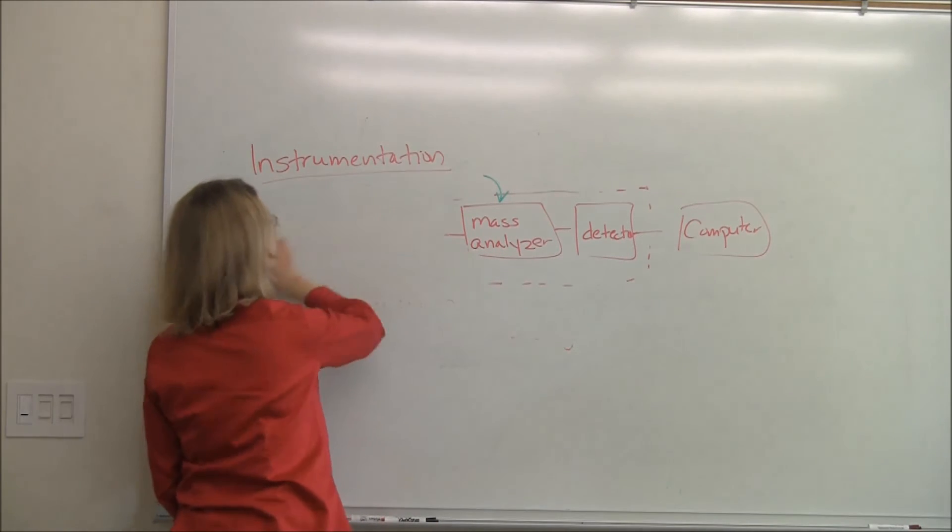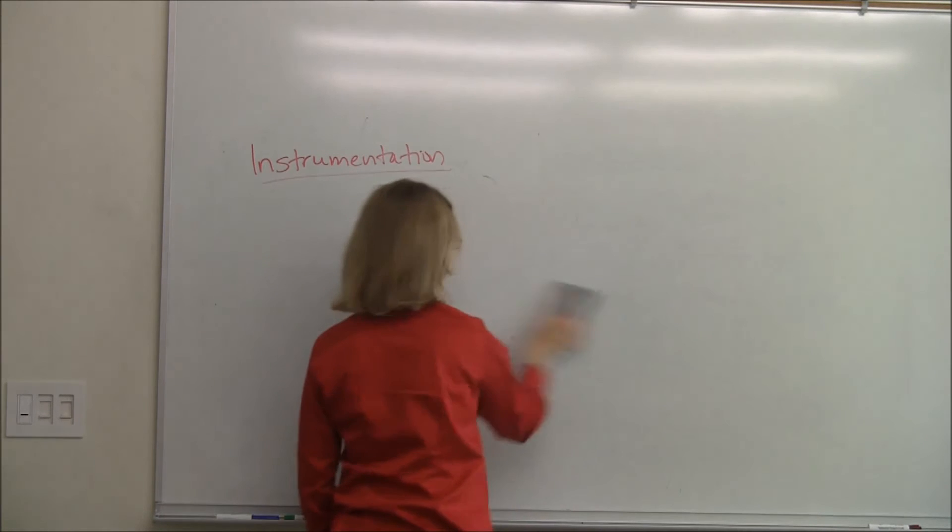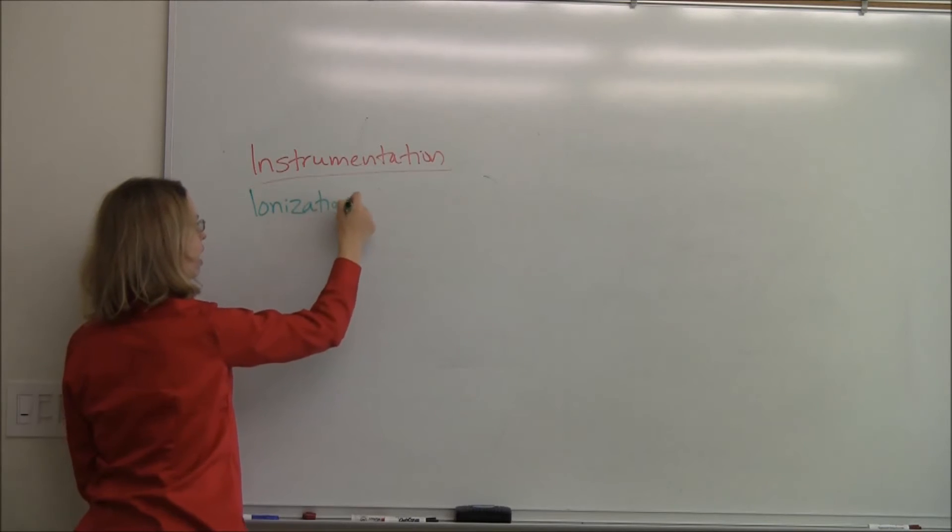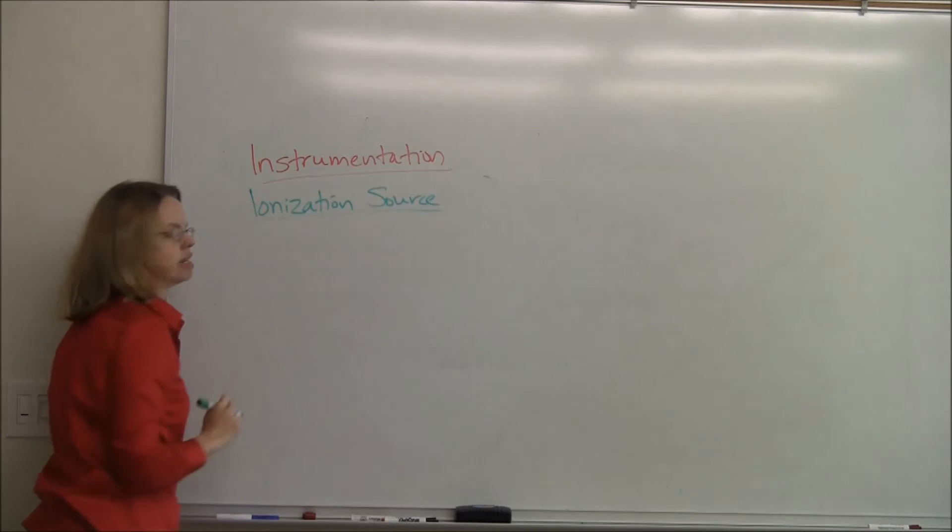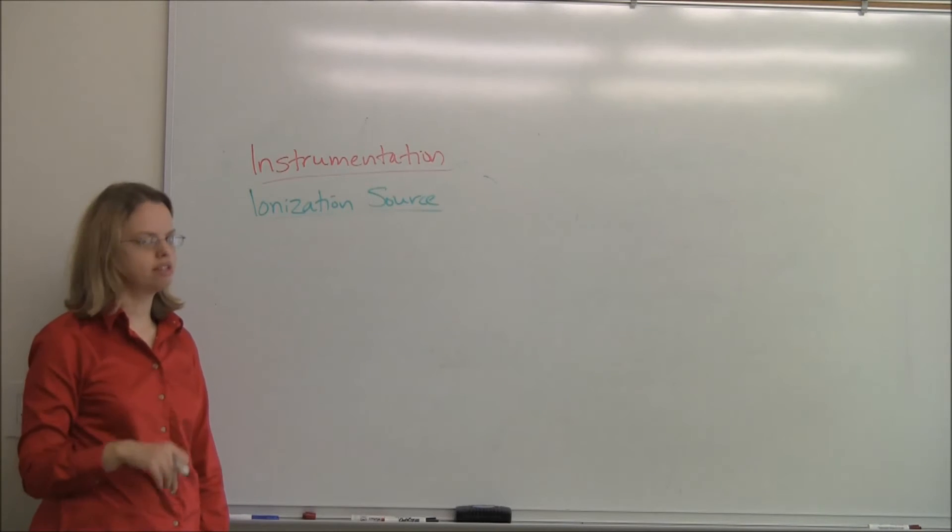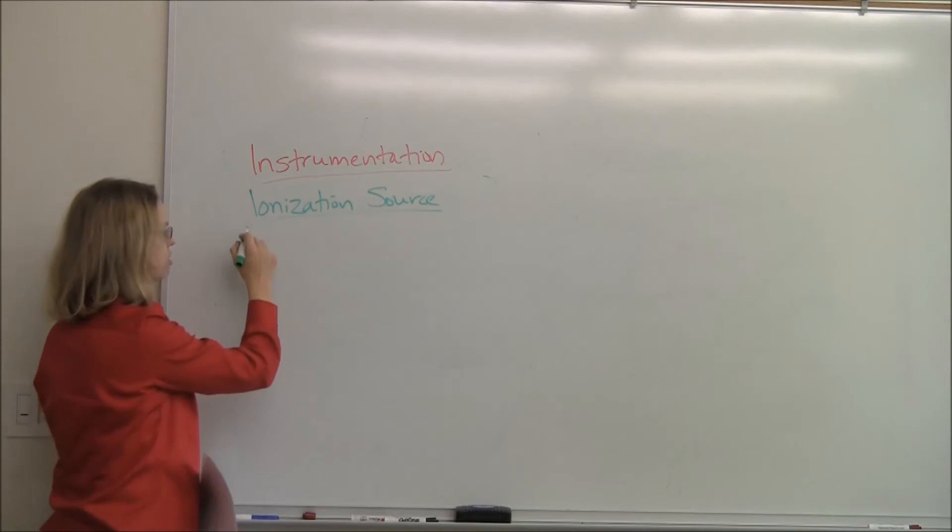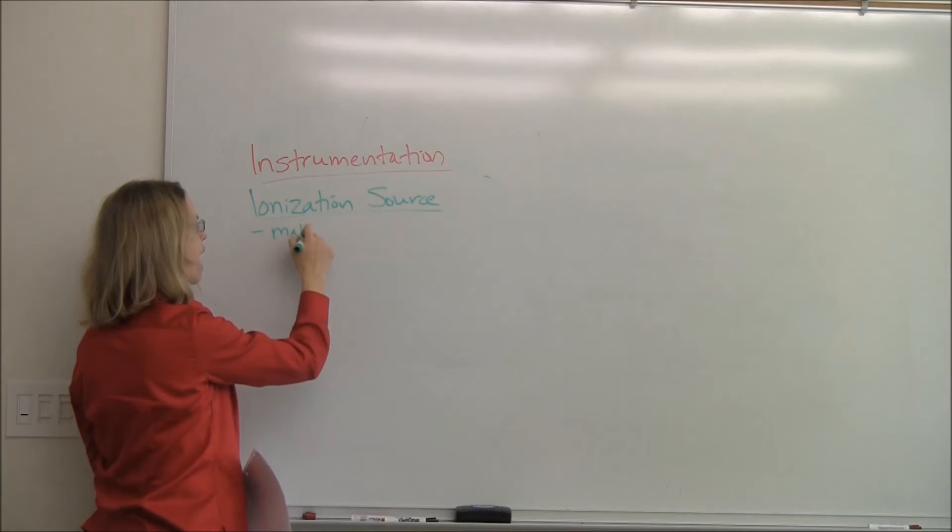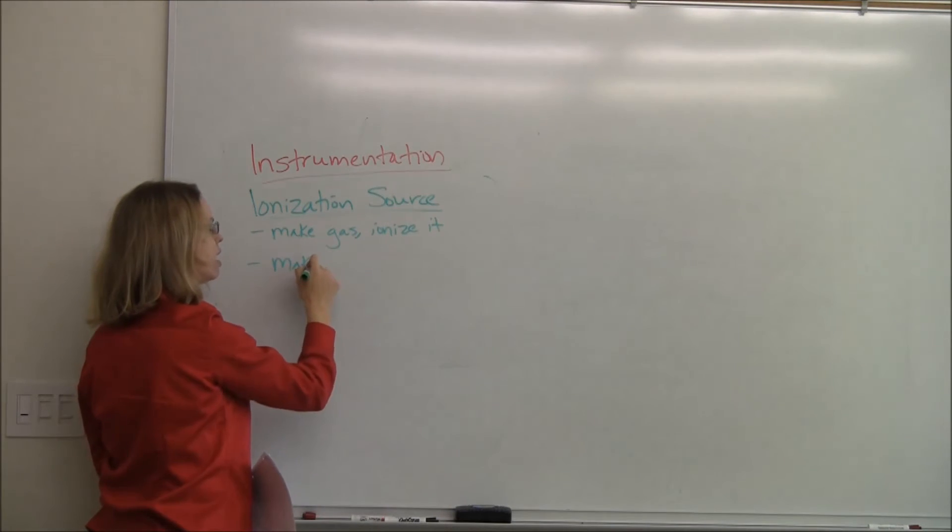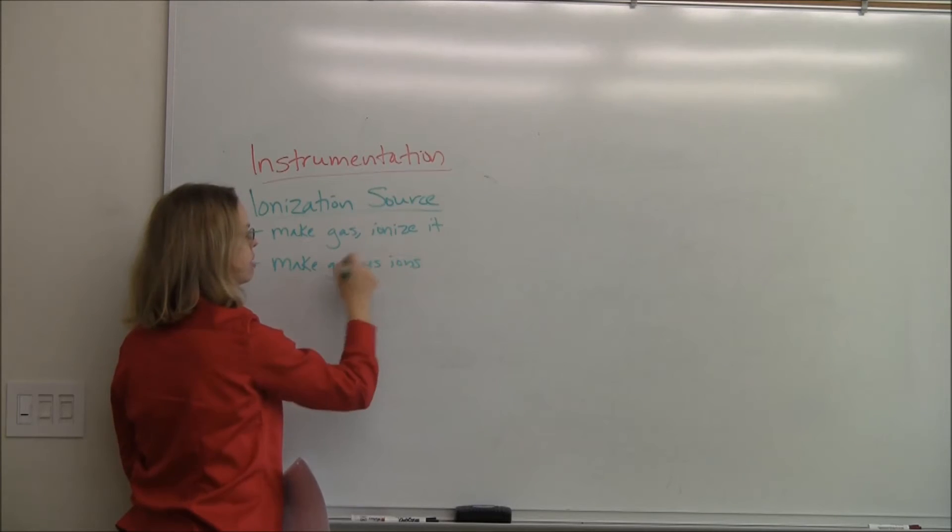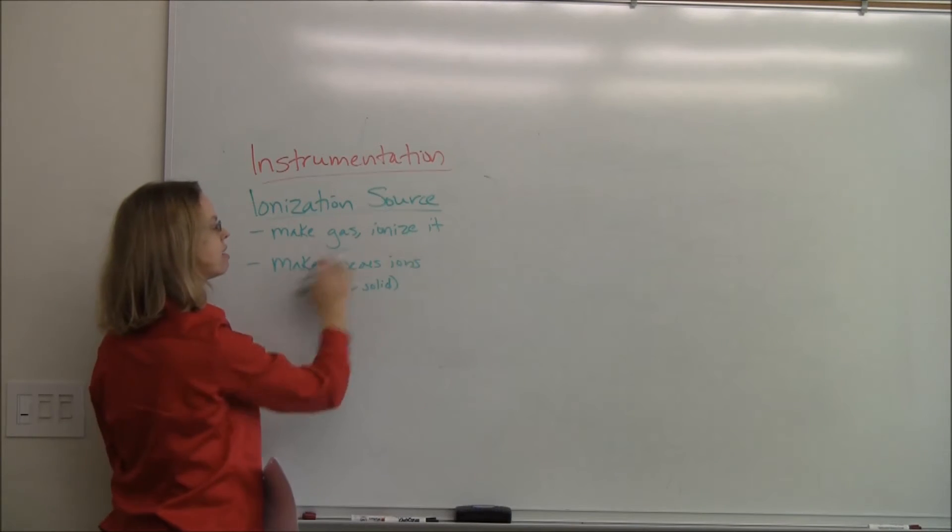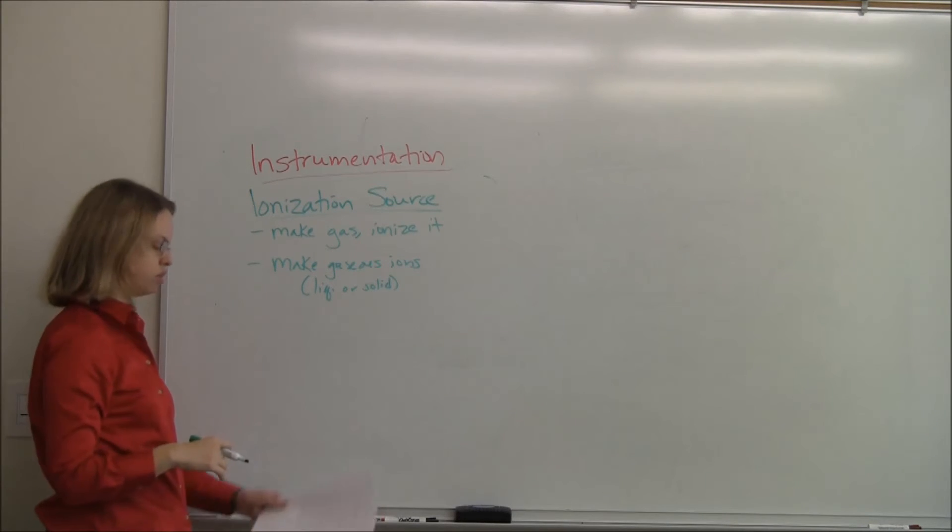So we'll start with the ionization source. There's really two different ways to do it. The one thing about mass spec is this. Everything must be in the gas phase. If you can't get it into the gas phase, you can't do it. And so for the ionization source, there's kind of two different ways to do it. You can make a gas, and then you can ionize it. Or you can make gaseous ions from some sort of other sample, like a liquid or a solid. So you can do it all at once. So you can first make a gas, then ionize it. Or you can just hit it and make gaseous ions all at once. You can do it either way.